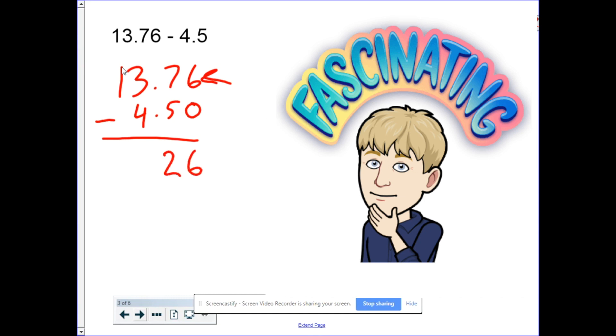3 minus 4. Can't do that. I have to borrow. So the 1 becomes a 0 and the 3 becomes a 13. So 13 minus 4 is 9. I'm sure you spotted the mistake. I forgot to bring my decimal point all the way down.